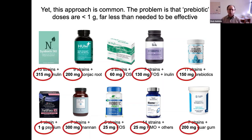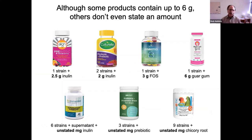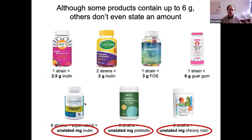Without picking on any particular product — it's so uniformly observed in the category — you see 200 milligrams, 60 milligrams, 25 milligrams of prebiotic. I'm not even commenting on the strains; let's make the assumption that the strains qualify and have been sequenced and proven to be probiotic. But just look at these extremely low doses for prebiotics — far less than what's needed to be effective. Some products do contain higher doses, two or two-and-a-half grams, but even that is stretching it. And then there are products that don't even state how much prebiotic is in there.